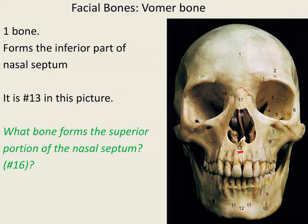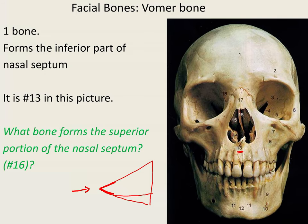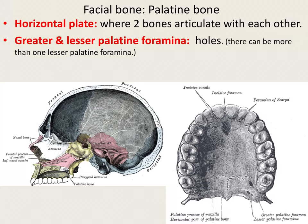The next bone is the vomer bone — a nice, easy bone to spot. The vomer bone is shaped like an expanded sail, and you're only seeing a small portion here from the front. It forms the nasal septum, dividing the left and right nasal cavity. There is only one vomer bone. The superior portion of the nasal septum is formed by the ethmoid bone — specifically the perpendicular plate of the ethmoid bone.